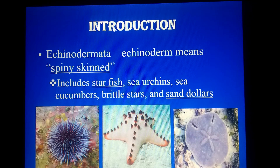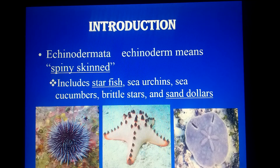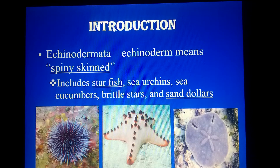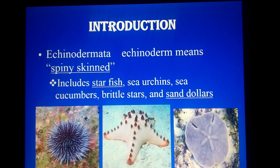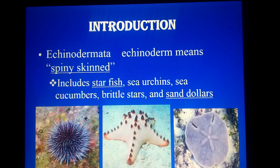First, the word derivation: 'Echinodermata' — 'echino' means spiny and 'derma' means skin. So echinoderms are spiny-skin animals. This word is derived from 'echinoderma': echino means spine and derma means skin.